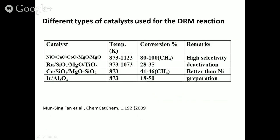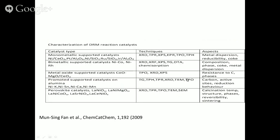The next catalyst is cobalt on silica or magnesia. The temperature is 873 K. Conversion with respect to methane is about 46%. This catalyst is better than nickel. Iridium on alumina at 873 K — why the temperature is so important is that higher temperatures mean we will be carrying out the reverse water gas reaction and also the carbon deposition reaction. So we have to be very careful about the temperature. One gets about 50% conversion. The monometallic supported catalysts — nickel on ceria, platinum on alumina, nickel on silica, ruthenium on silica, iridium on alumina — have been characterized by XRD, TPR, XPS, EPR, TPO, and temperature-programmed hydrogenation.